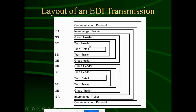ST starts as the Transaction Header and ends as SE, the Transaction Trailer. GS starts as the Group Header and ends as GE, the Group Trailer. ISA starts as the Interchange Header and ends as IEA, the Interchange Trailer. Between ST and SE you can see multiple data segments — such as N1, REF, DTM, PO — containing the required information for a purchase order, acknowledgement, or invoice file.